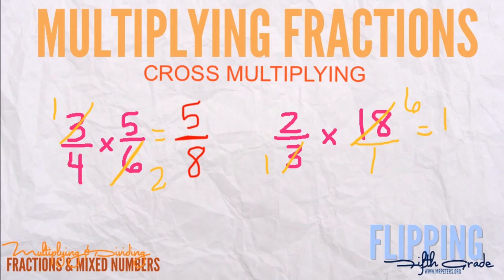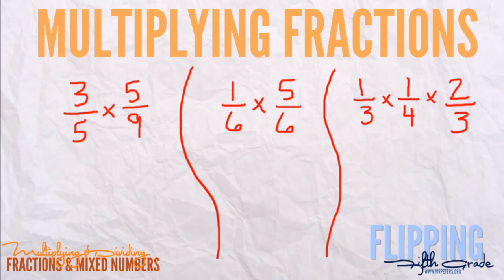So now we get two times six, which is 12 over one, or just 12. That's how you use cross multiplying to limit the amount of simplifying when multiplying fractions. Using the cross multiplication method, we're going to go through some practice problems.